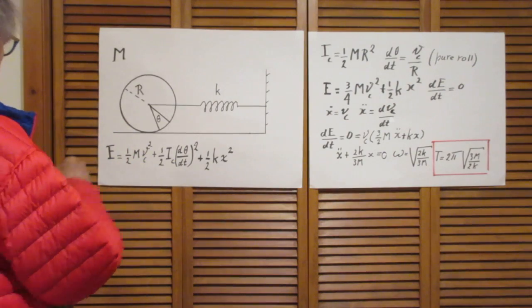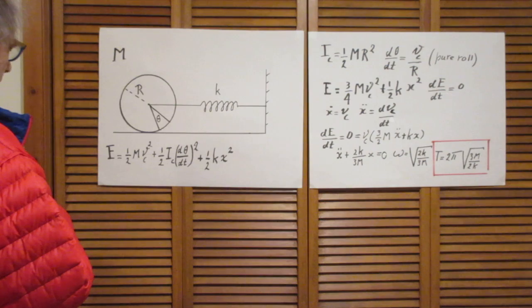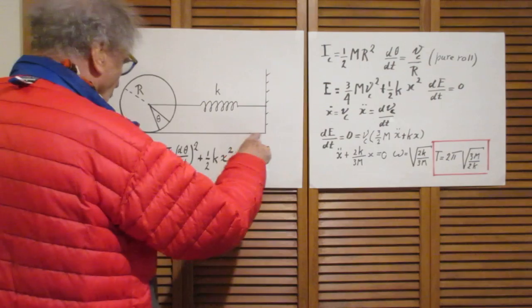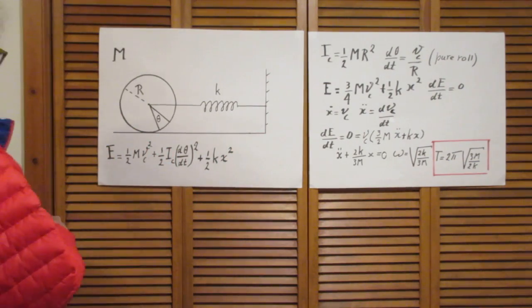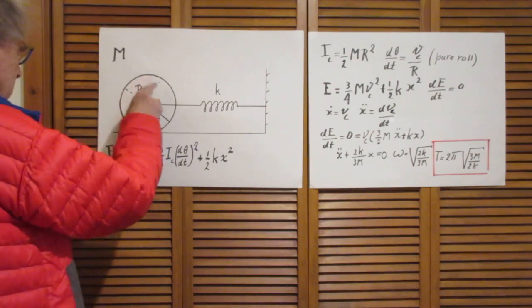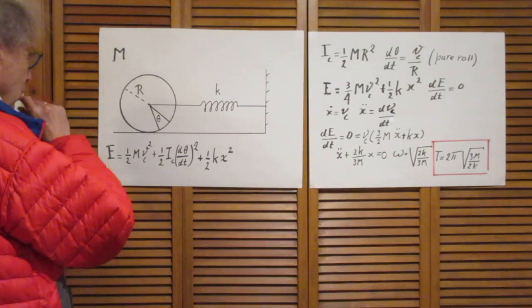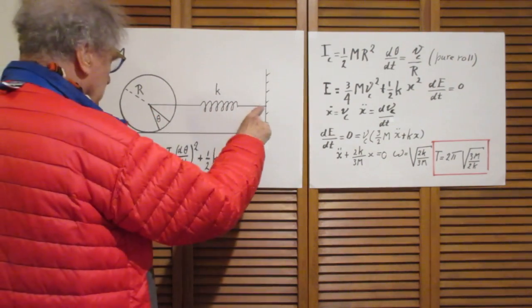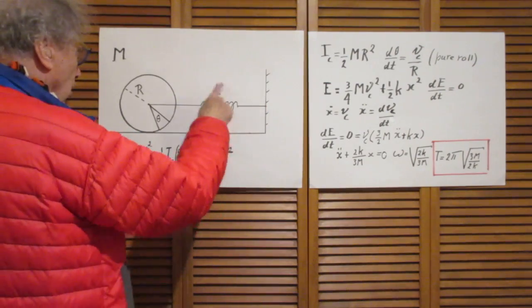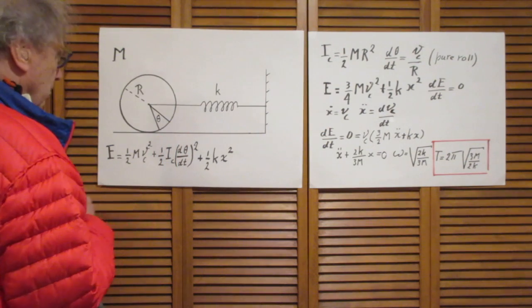A solid disk, mass M, radius capital R, on a horizontal surface. As always, enough friction so that this object will never slip. It will always roll, pure roll. It is connected to a spring which is attached here to the wall with spring constant K, and the mass of the spring can be ignored.